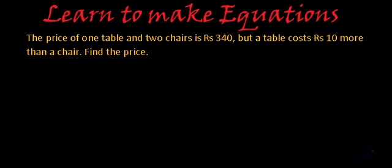So we have a collective price of a table and two chairs, right? And the condition given to us is the cost of the table is rupees 10 more than a chair. And then we have to find their individual prices.